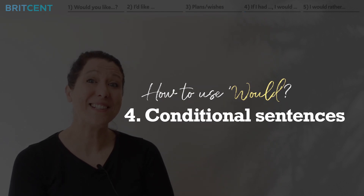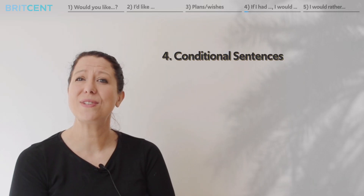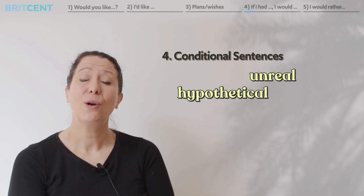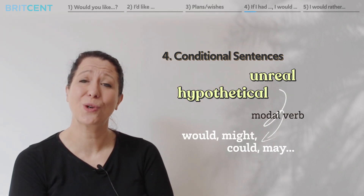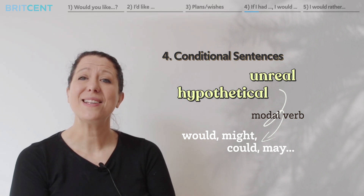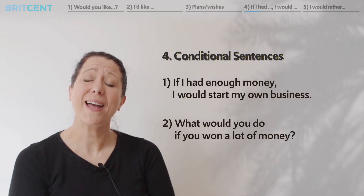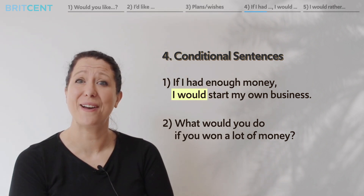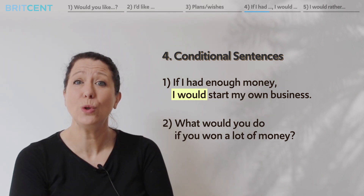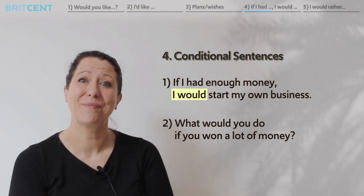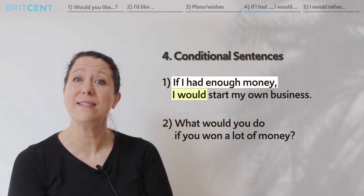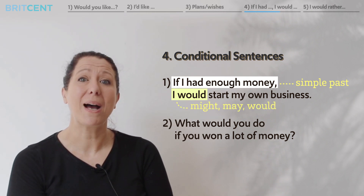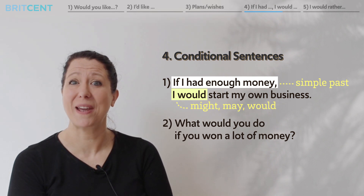Let's look now at conditional sentences. When we use the second conditional, we talk about something hypothetical or unreal. We use a modal verb such as would, might, could, may, etc. For example: If I had enough money, I would start my own business. We don't know if the person will have enough money, but they're talking about what they would do if they did have enough money. Remember: the 'if' part of the sentence takes simple past, and the result part takes a modal verb such as might, may, would, etc., plus base verb.